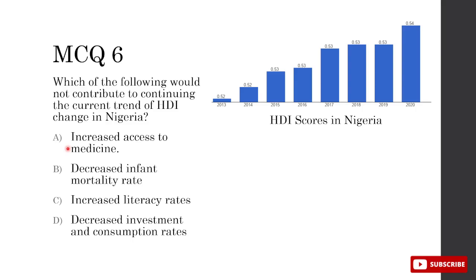Which of the following would not contribute to the continuing trend of HDI increase in Nigeria? A — increased access to medicine raises life expectancy, raising HDI. B — decreased infant mortality raises life expectancy. C — increased literacy rates increase education. D — decreased investment and consumption rates doesn't directly impact HDI. Decreased gross national income would lower HDI, but decreased investment and consumption rates is not the same as decreased GNI. So D is correct — it would not directly contribute to continuing the HDI trend.